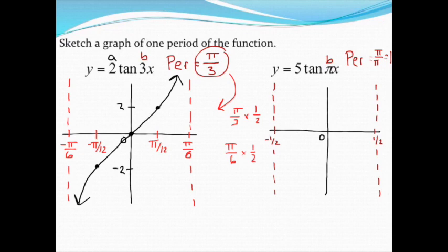Next up, I need half of that. Well, half of a half gets me a fourth for this point over here, and then half of a half on the other side gets me negative 1 fourth. Lots of symmetry with these tangent graphs.